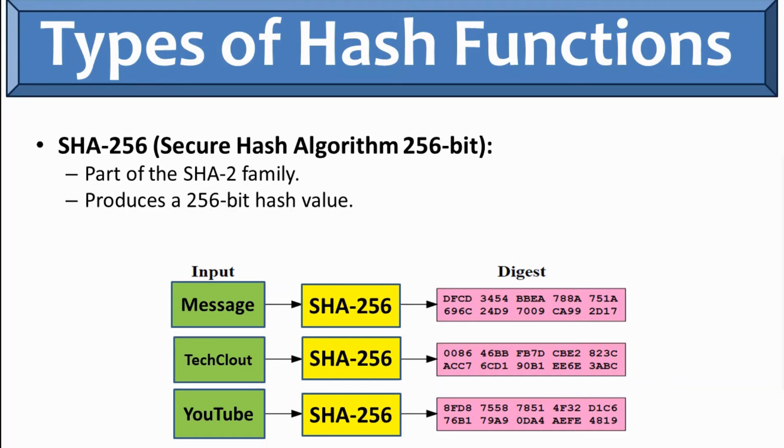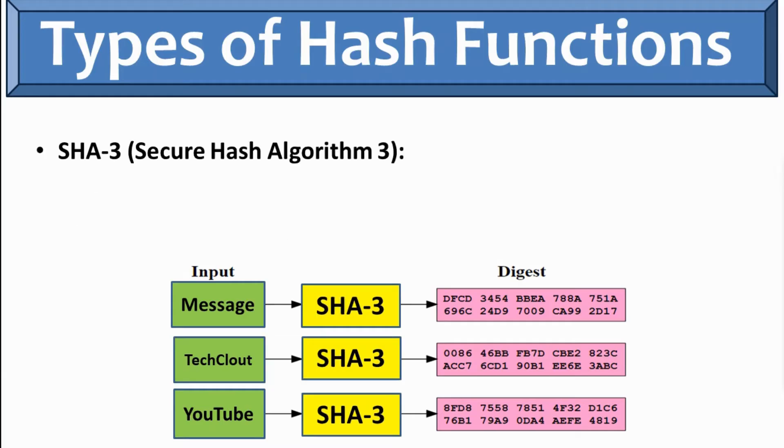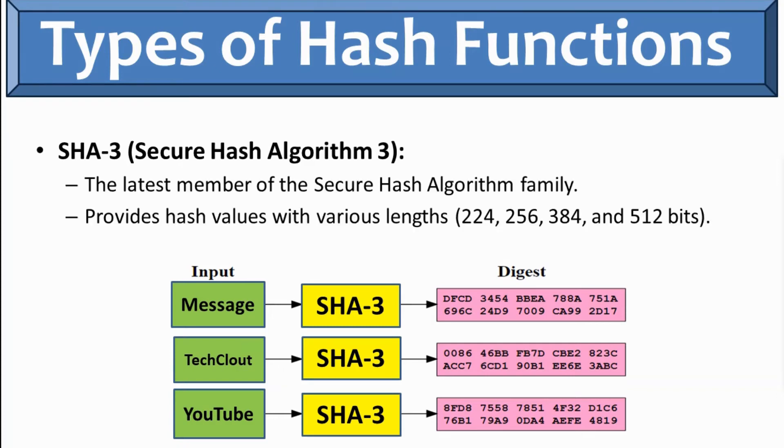Then SHA-3, which is Secure Hash Algorithm version 3. So the latest member of the secure hash algorithm, and it provides hash value with various length of 224, 256, 384, and 512 bits.